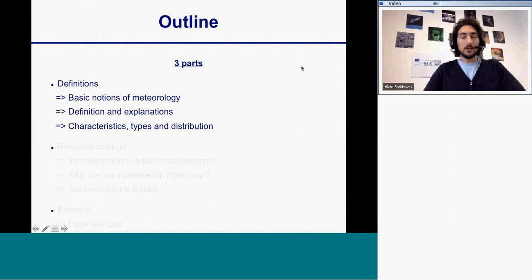The lecture will be in three parts. The first one is about definitions and will mainly give basic notions of meteorology. Then I will define and explain what is polar low exactly. Then I will finish this first part with the characteristics and the types and distribution of polar lows for the Nordic axis area.